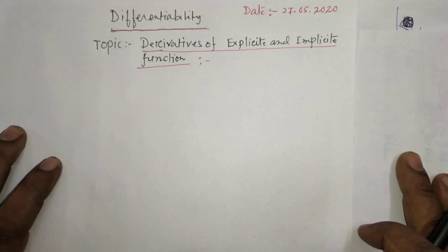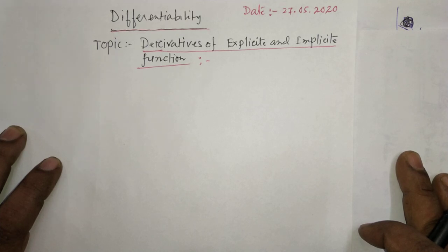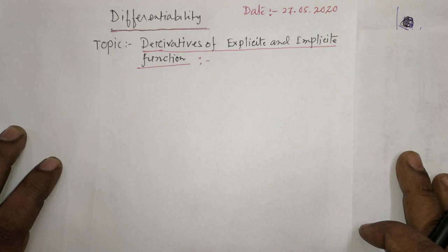Good afternoon, my dear students. In the last class we discussed standard derivatives and the chain rule, and applied chain rules to solve a few problems. I hope you understand and are capable of solving such problems. Moving ahead on the chapter differentiability, there is a subtopic called derivative of explicit and implicit functions.